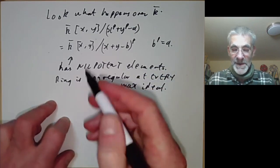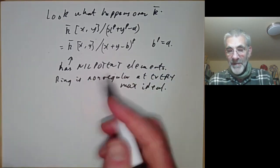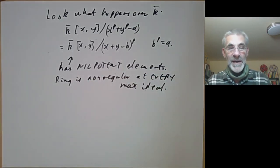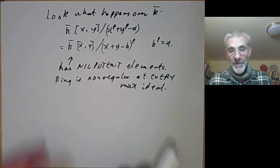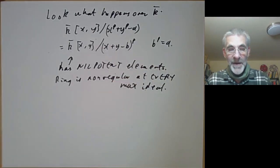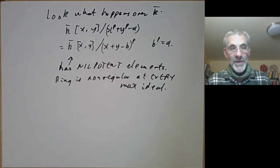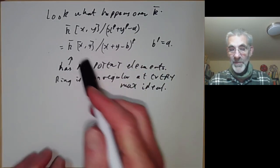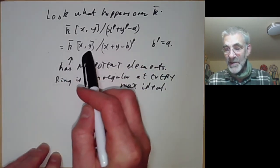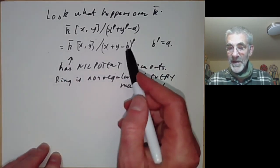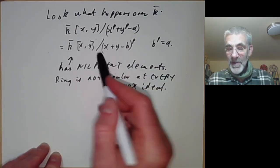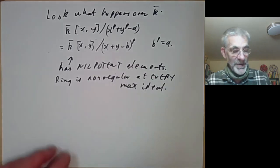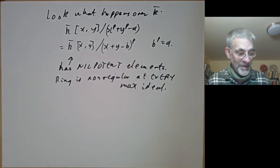So something has gone very badly wrong with our notion of regularity being non-singular. We've got some variety over a non-algebraically closed field that's regular at every point, and when we move to the algebraically closed field something goes completely wrong — we start getting nilpotent elements all over the place.